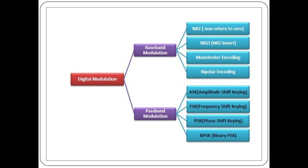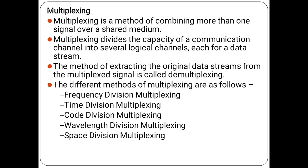Digital modulation is divided into baseband modulation and passband modulation. In baseband modulation you have non-return to zero, return to zero, invert, Manchester encoding, and bipolar encoding. In passband modulation you have Amplitude Shift Keying, Frequency Shift Keying, Phase Shift Keying, and Binary Shift Keying.